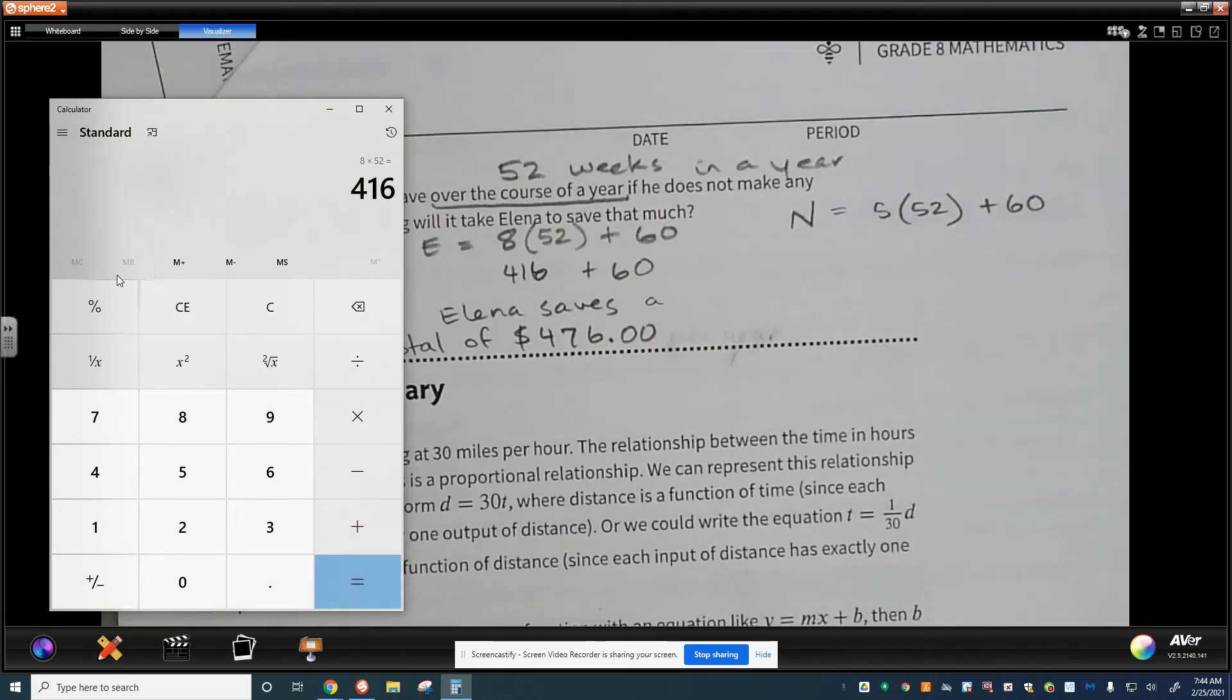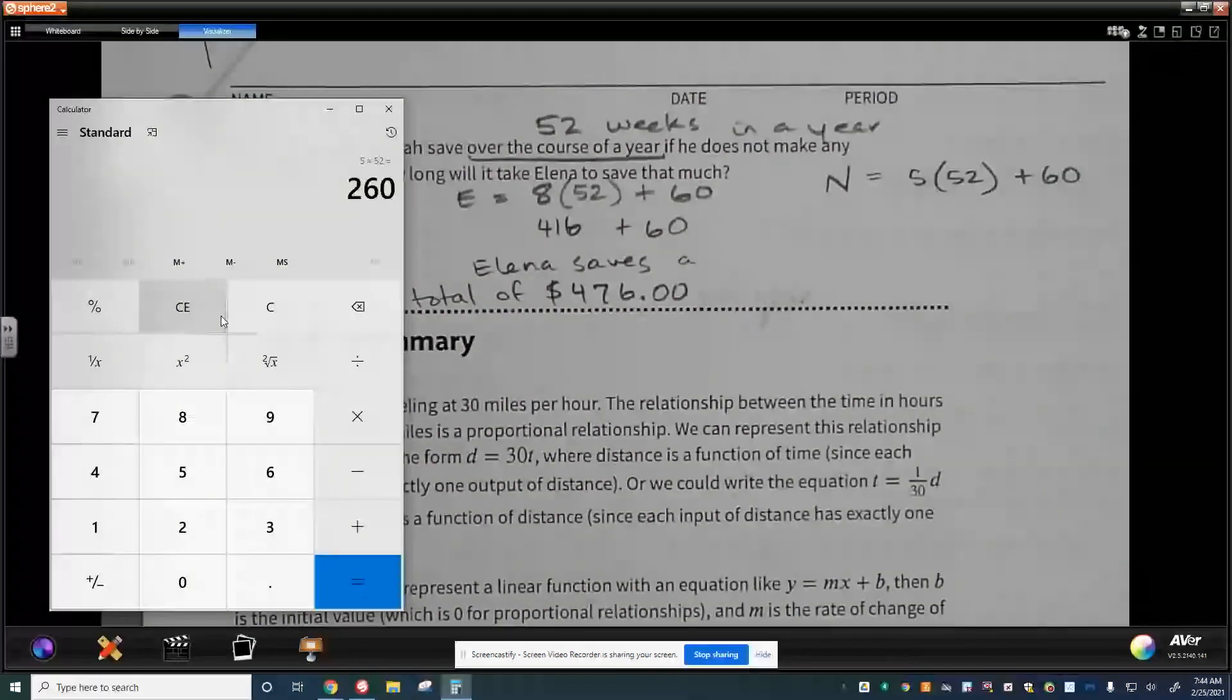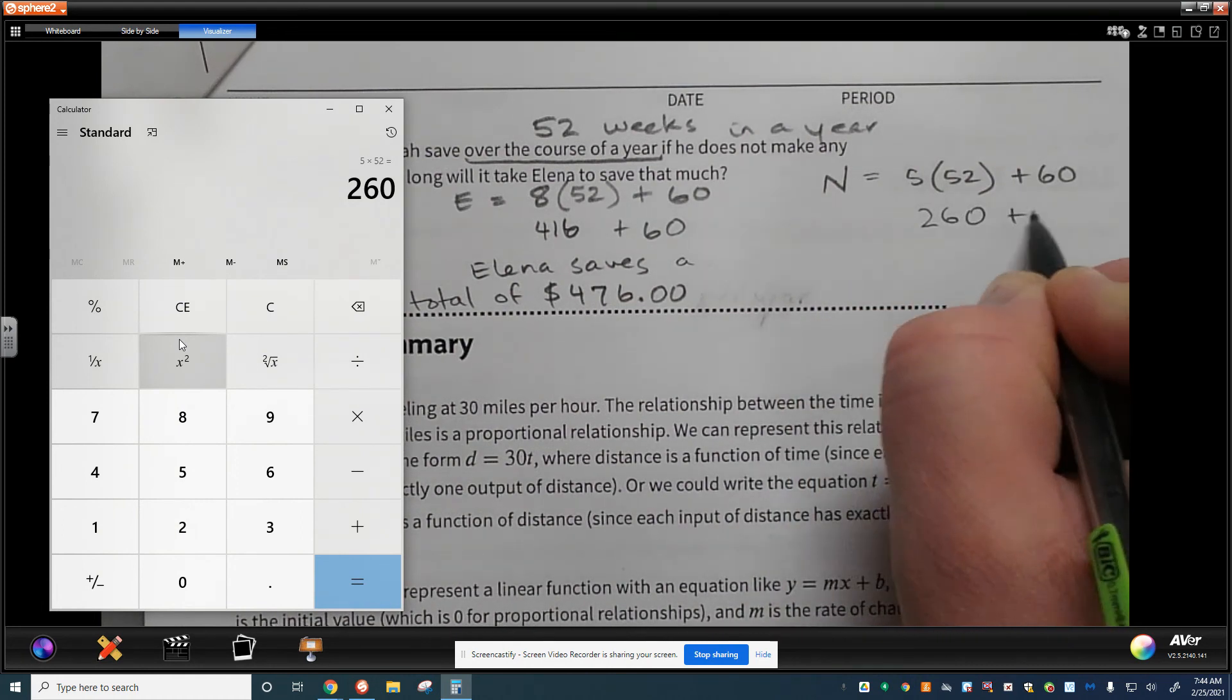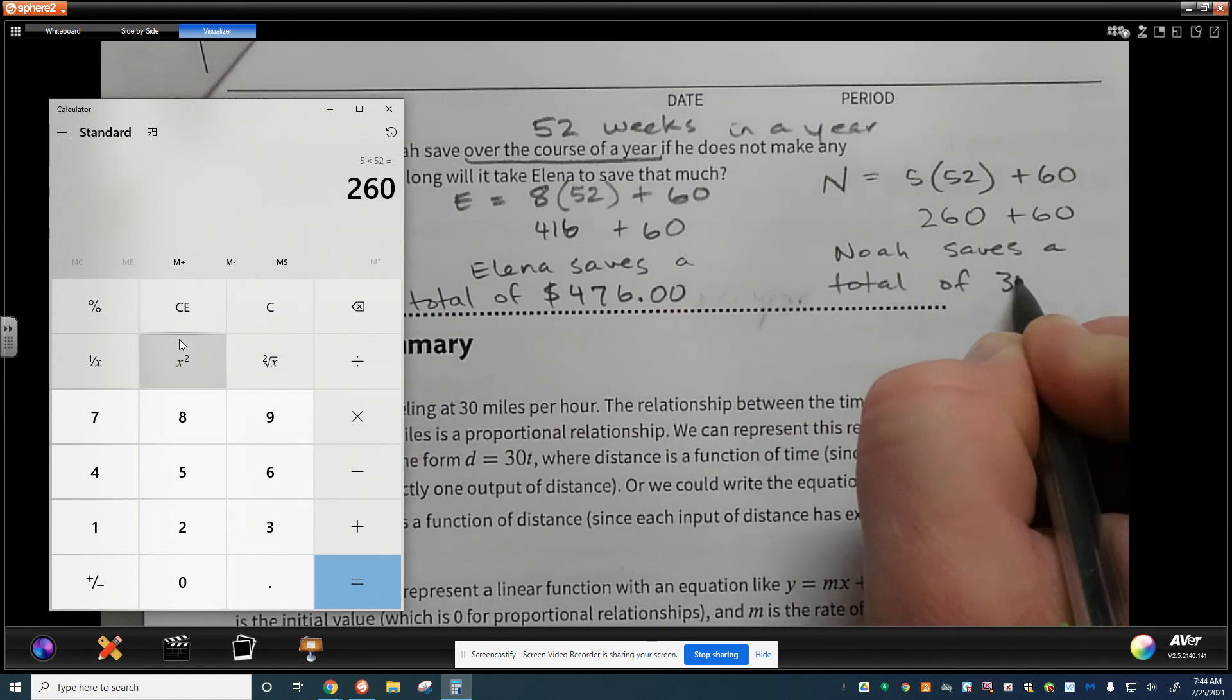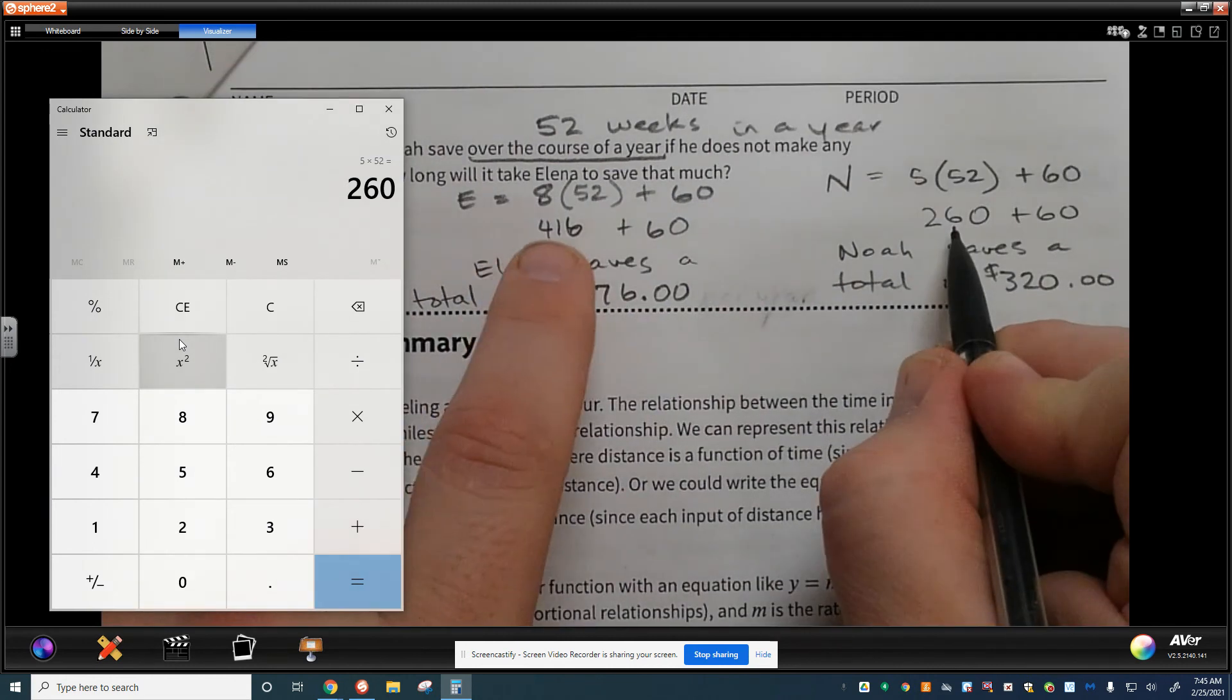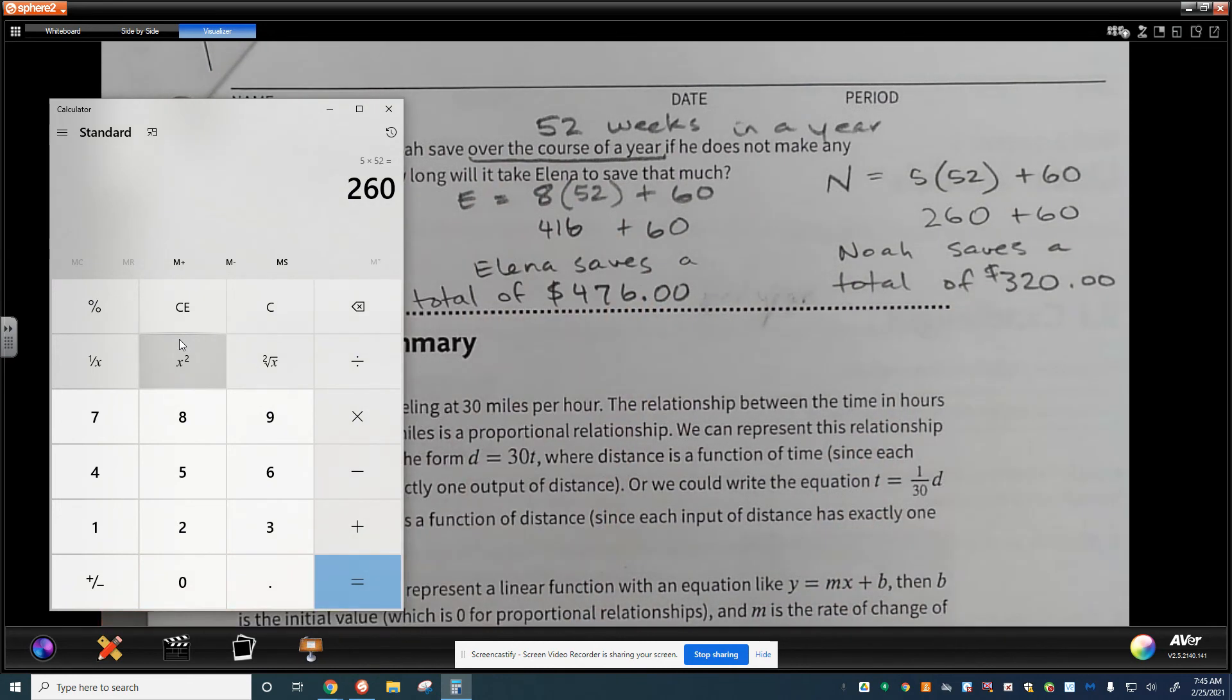When we talk about Noah 5 times 52 Noah has saved $260 weekly plus the $60 that was already there so we can say Noah saves a total of $320 and there you go. We have to be very careful to say how much money he's saving per year because the amount of money that they're saving per year is $416 and $260 the total amount of money is different because we have to add in what they started out with.